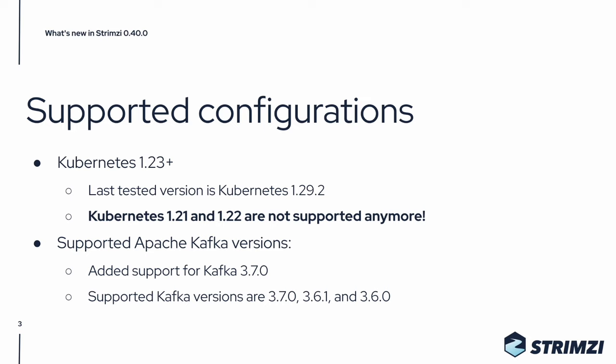Strimzi 0.40 also adds support for Kafka 3.7 and removes support for Kafka 3.5. That means that the supported Kafka versions are 3.7.0, 3.6.1, and 3.6.0.